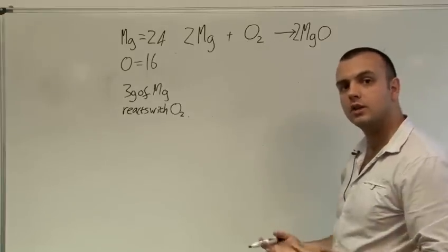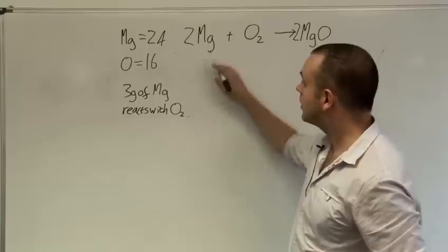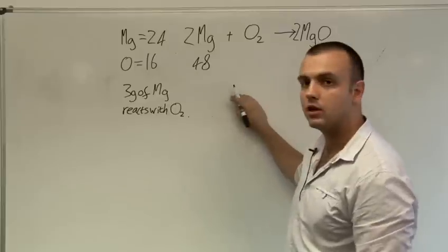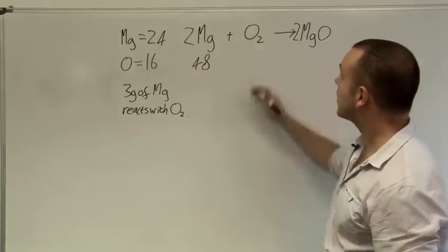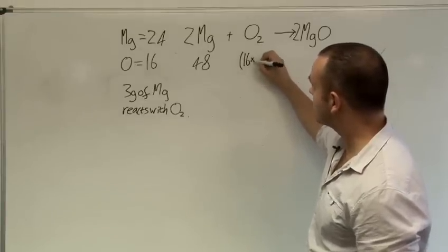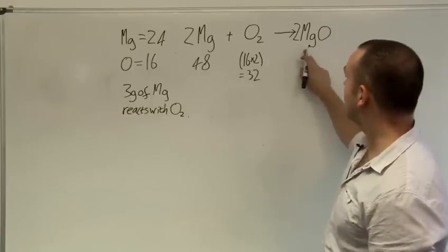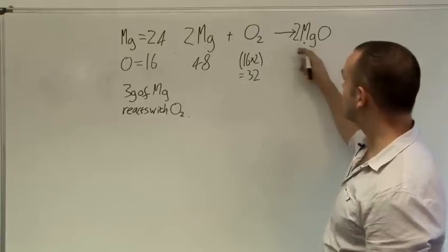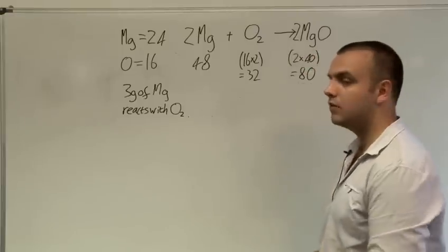Now if we find the masses involved here. Two moles of magnesium will have a mass of 48 grams since one mole of magnesium has a mass of 24 grams. One mole of oxygen molecules will have a mass of 16 times 2 equals 32 grams. One mole of magnesium oxide would be 24 plus 16 equals 40. However because there's two of them we have a total mass on the right hand side of 80 grams.